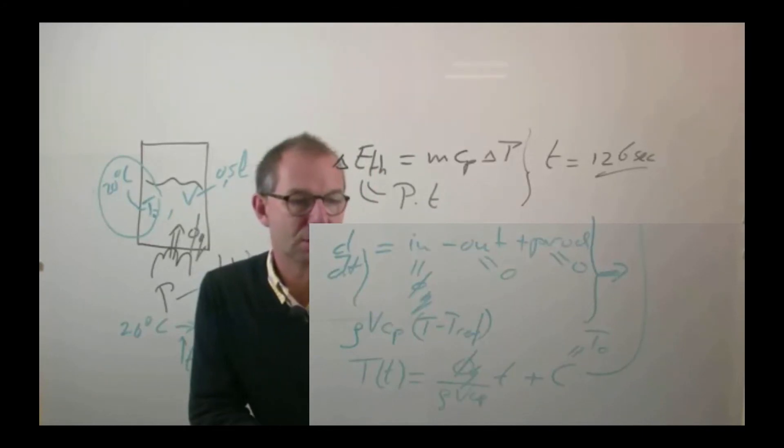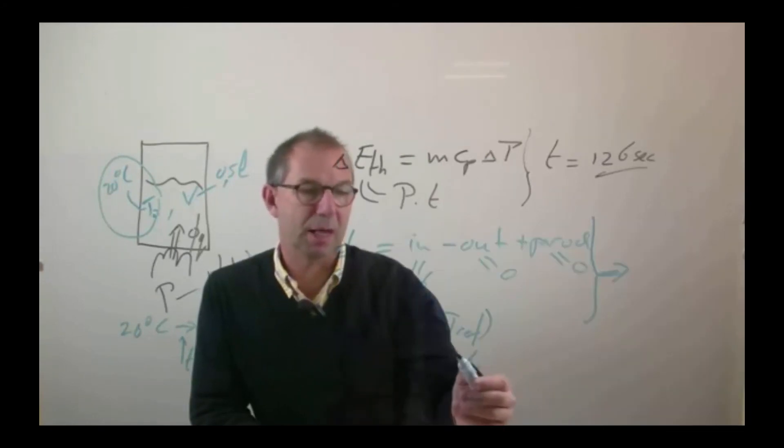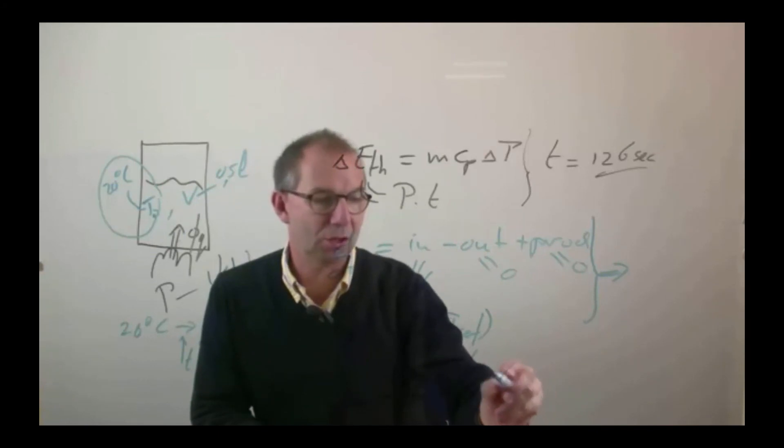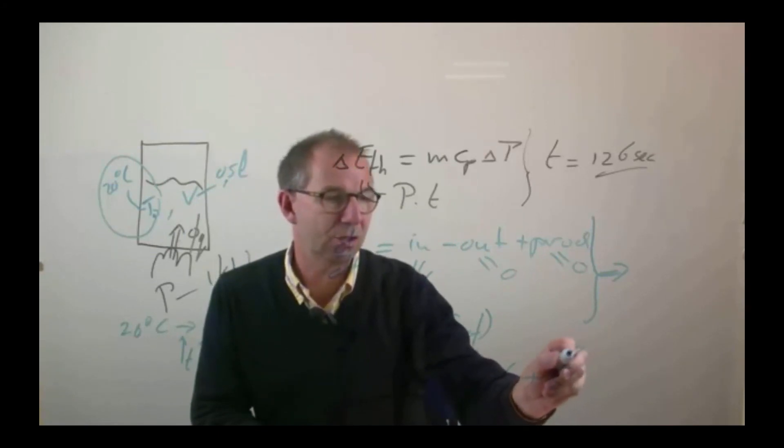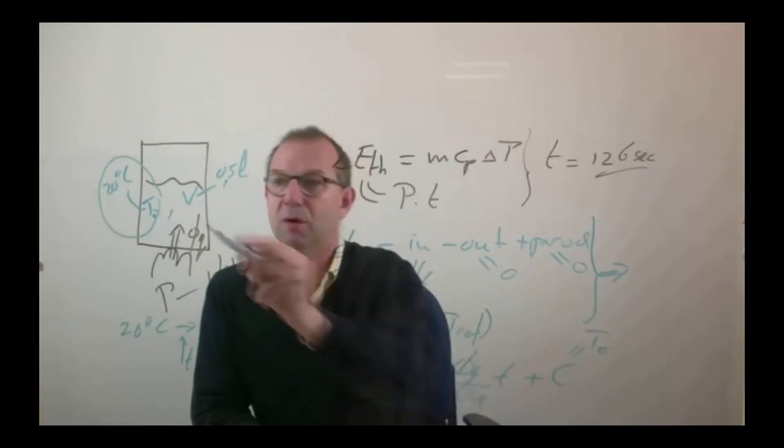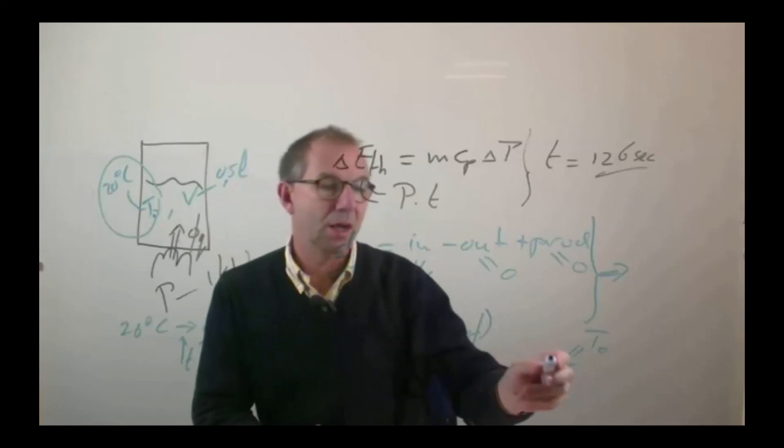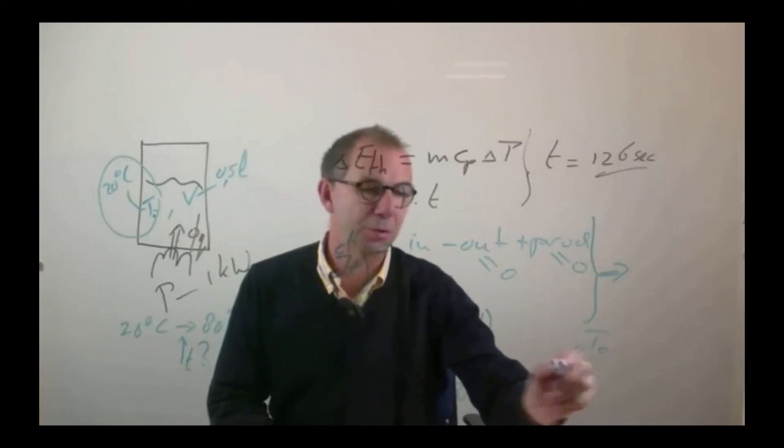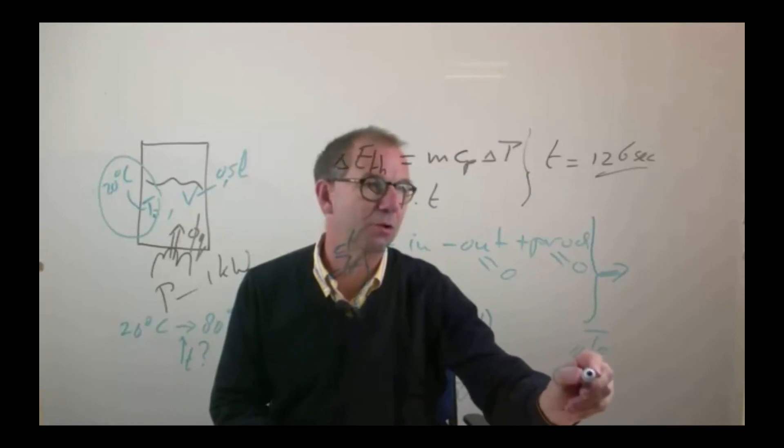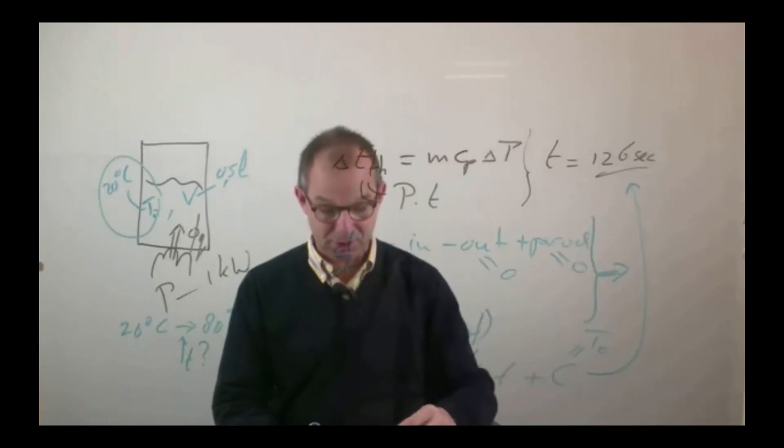During the differentiation this reference temperature drops out, but when you integrate back you get back an integration constant and that is T0 via the boundary condition. And obviously if you compute how long it takes before you reach 80 degrees starting from your 20, you'll get the same answer.